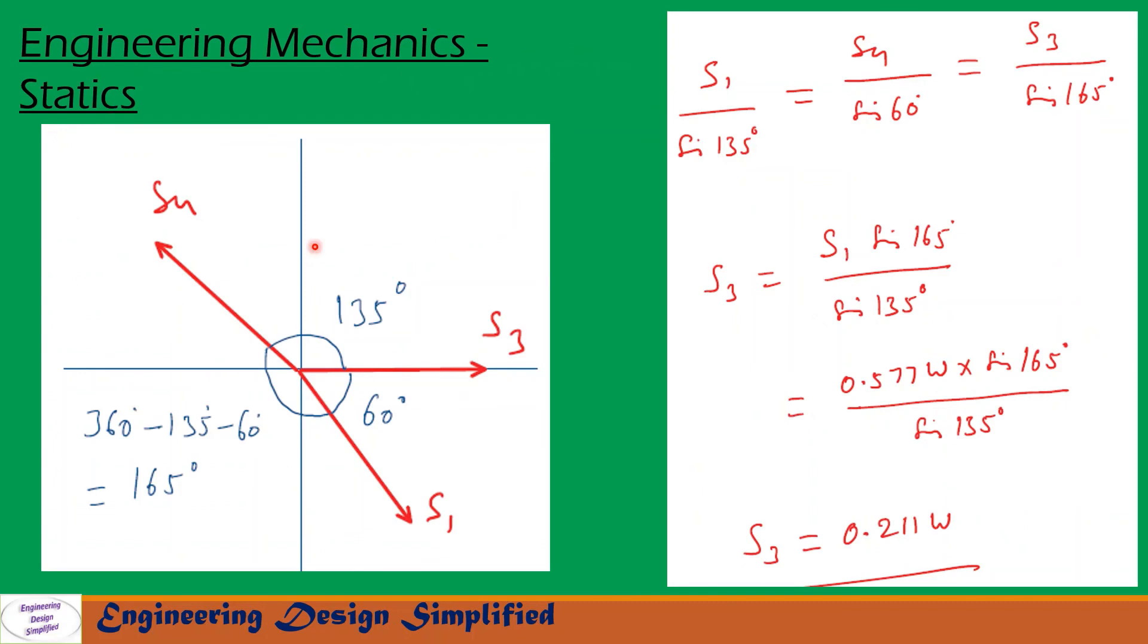Now let us apply Lami's theorem. Lami's theorem is S1 by sine 135 equal to S4 by sine 60. That is also equal to S3 by sine 165. So from this, from first and last terms, we can write S3 equal to S1 sine 165 by sine 135. So S1 we already found. So after substituting the values and simplification, we get S3 equal to 0.211 into W.